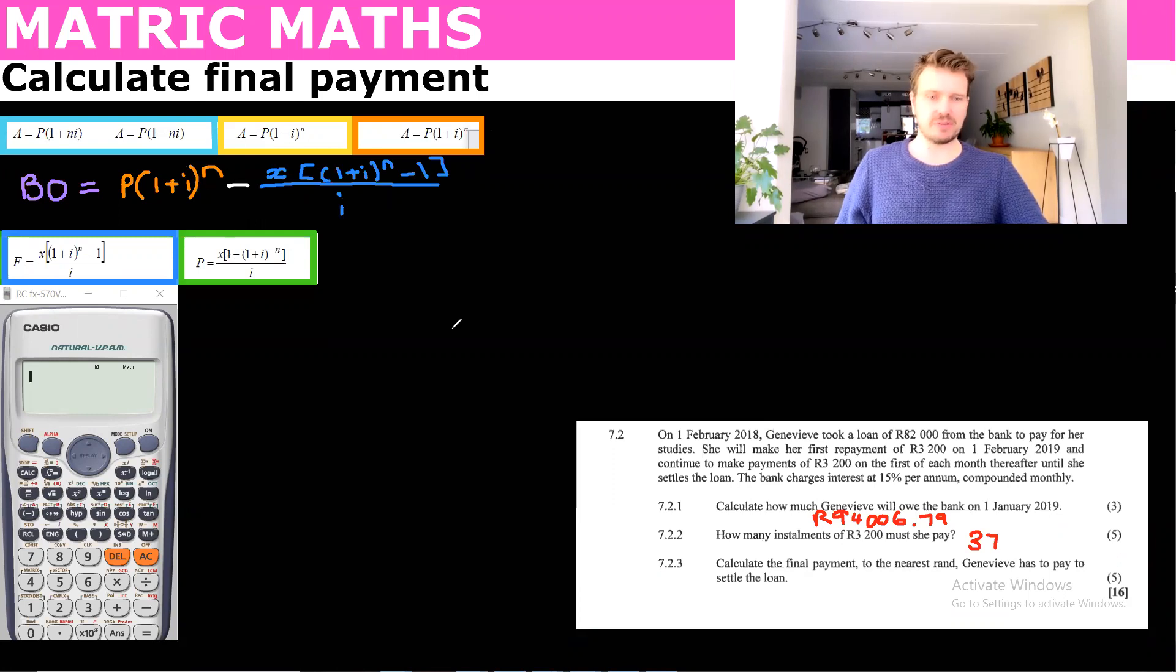So that would be, so we worked out here that there was 37 payments. So let's just do that on a timeline quickly. So we've got T0, you've made all these payments and at 36, at T37 there's a final payment. T36, T37 is the last payment over here. Okay, so all we need is the balance here at T37 and then just give it one month's interest.